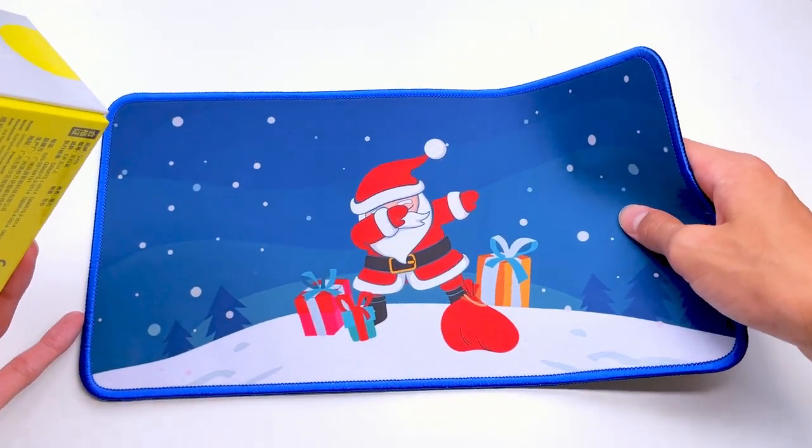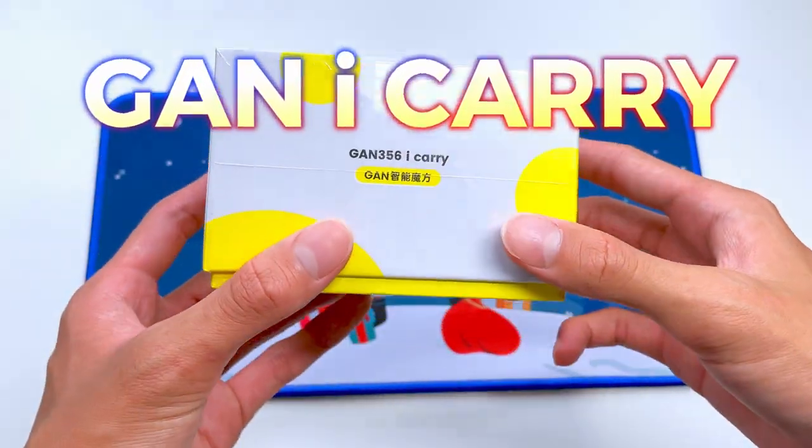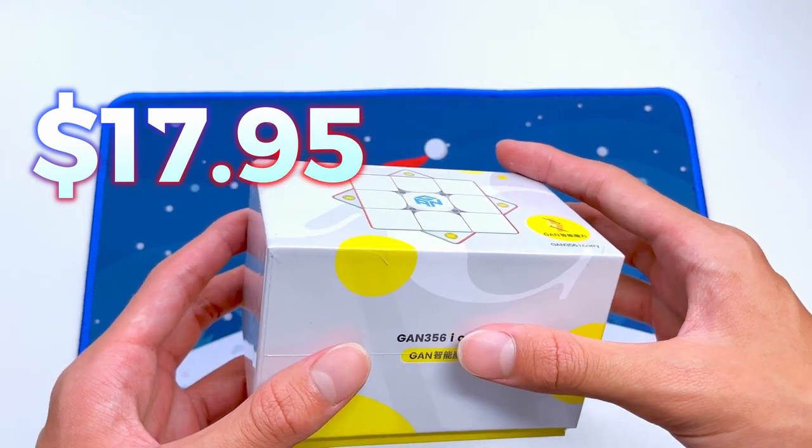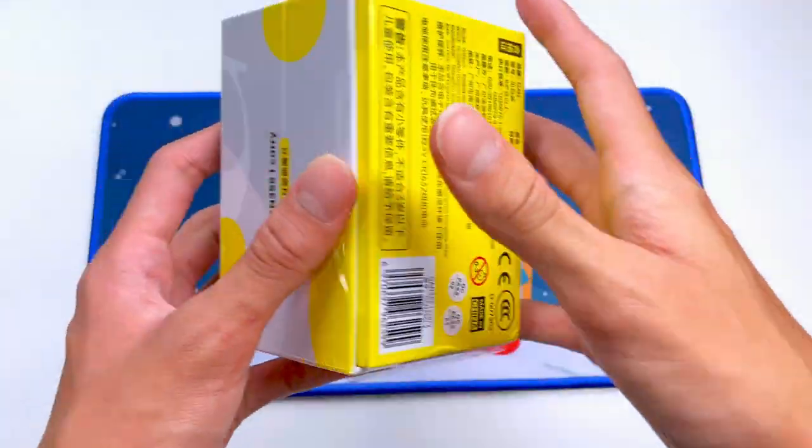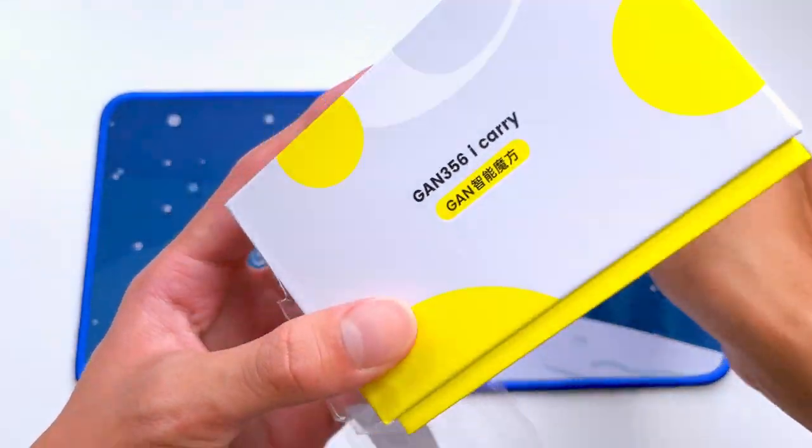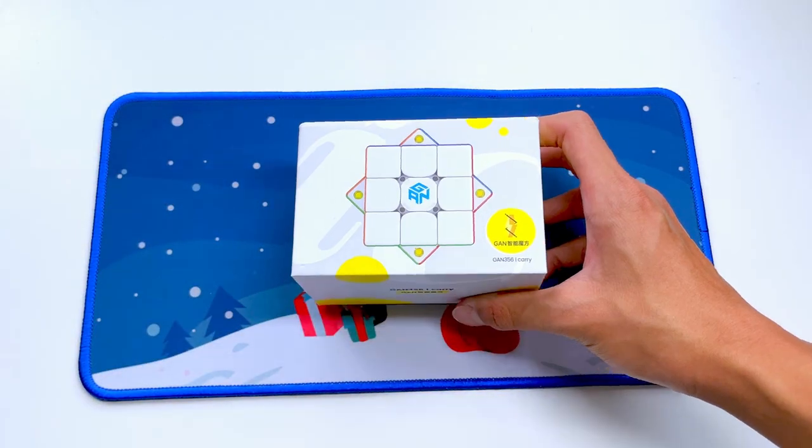All right, and next we have the Gan i Carry. So this is actually my first smart cube, and I managed to get this for a pretty cheap price thanks to the SpeedCubeShop Black Friday sale. I think the reason why this one is cheaper than the normal Gan i is because it doesn't have a gyroscope or something, and I'm going to have to use my phone in order to connect to the app right here.